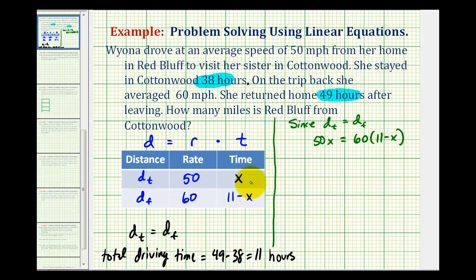So now we can solve this for x and determine the time spent driving in each direction. And then from that, we can determine the distance from Red Bluff to Cottonwood. So we'll distribute here. We would have 50x equals 660 minus 60x.